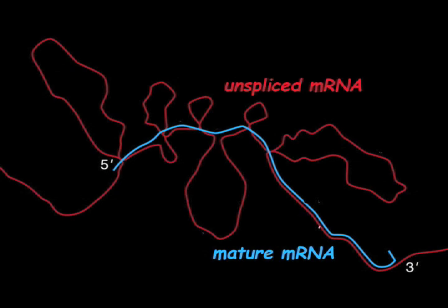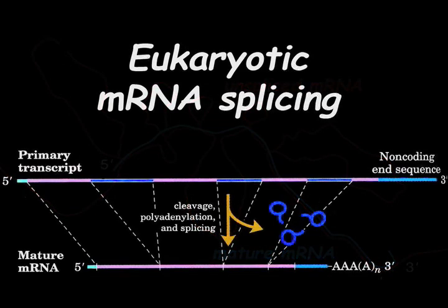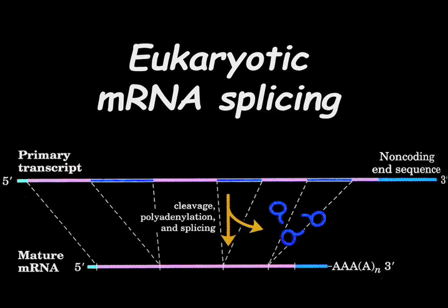Many eukaryotic mRNAs contain non-coding introns. These must be removed and the exons ligated to create the mature mRNA. RNA molecules, termed ribozymes, catalyze self-splicing reactions.